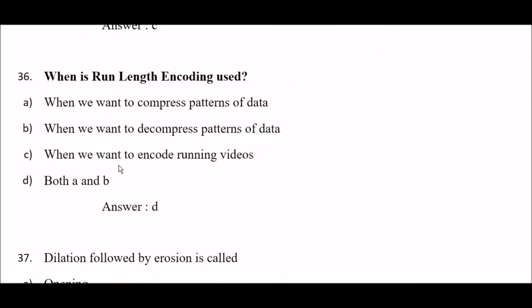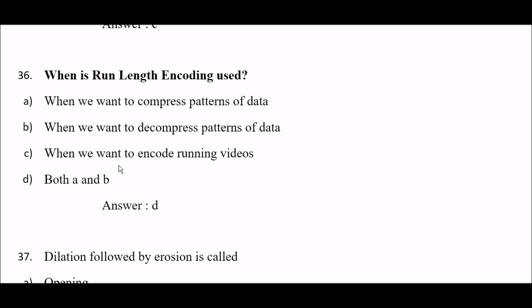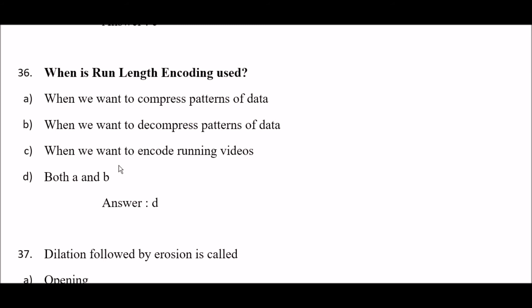Next question: when is run-length encoding used? Option A: when we want to compress patterns of data. Option B: when we want to decompress patterns of data. Option C: when we want to encode running videos. Option D: both A and B. The right answer is option D — both A and B. Run-length encoding is used both to compress and decompress patterns of data.